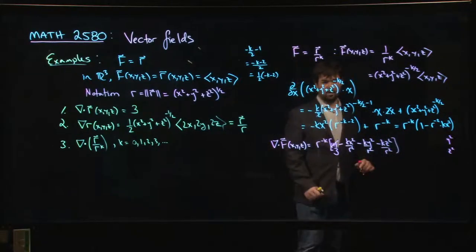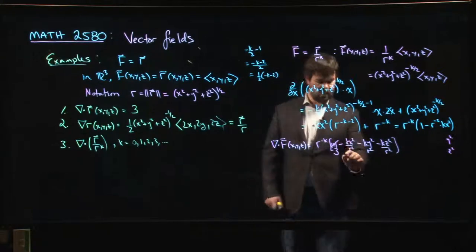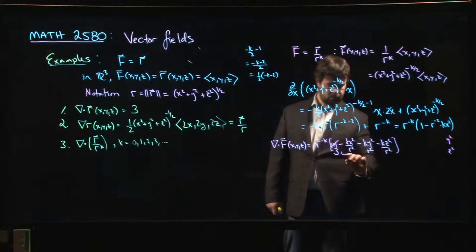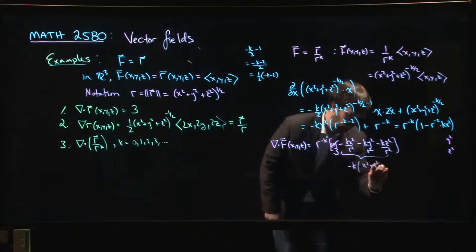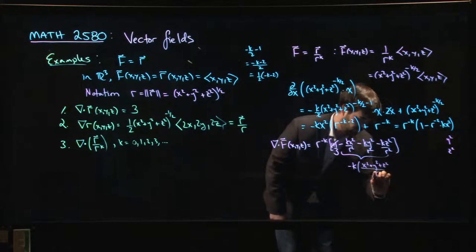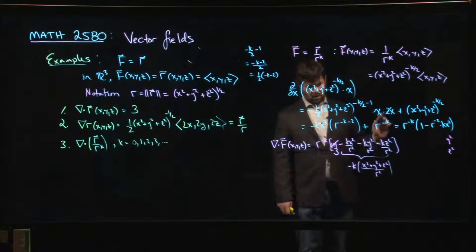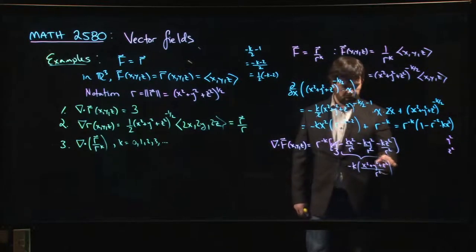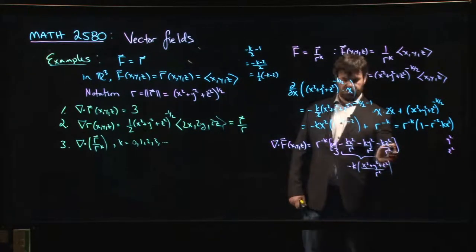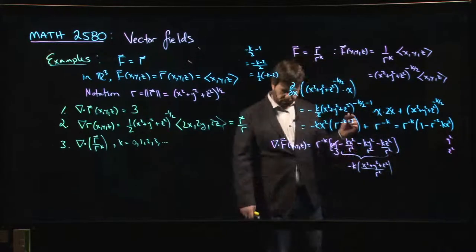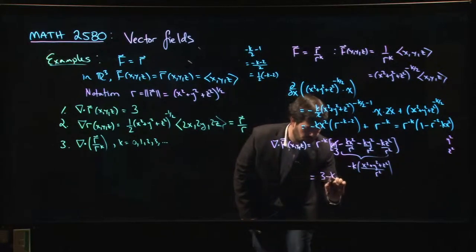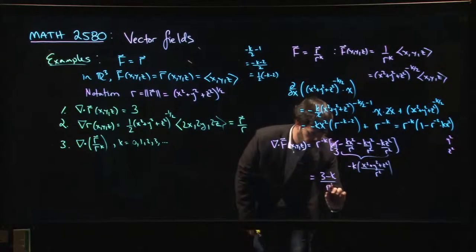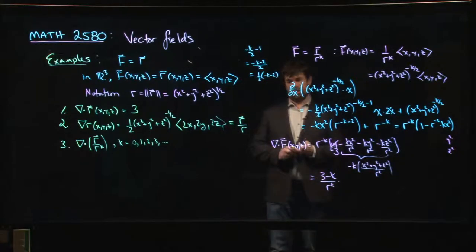z squared over R squared. And maybe you see a simplification, because if I factor out a k here, this whole thing is minus k times x squared plus y squared plus z squared over R squared. Which is interesting, because x squared plus y squared plus z squared is R squared. So this whole thing here is just minus k. So what I end up getting is I get 3 minus k over R to the k. That's my divergence.